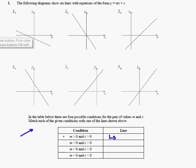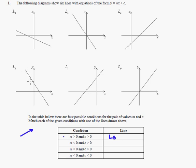The second condition: m is less than zero and c is greater than zero. So that would be a negative gradient and a positive y-intercept. We're looking for a line going this way and crossing high — it's going to be L4, which has a negative gradient and a positive y-intercept.